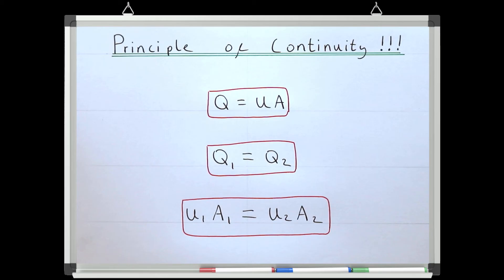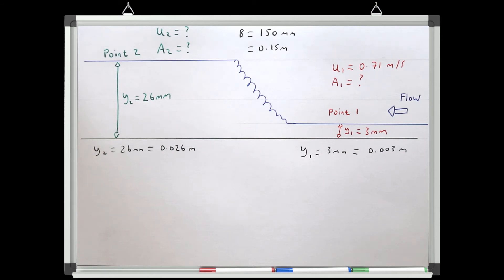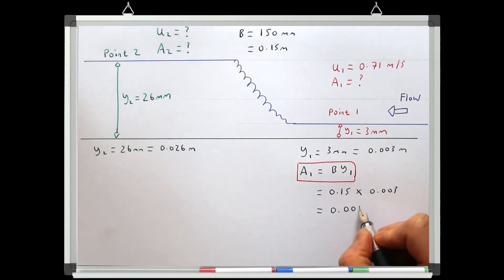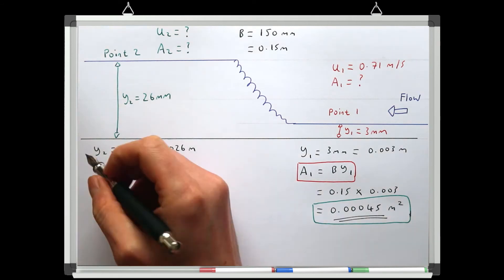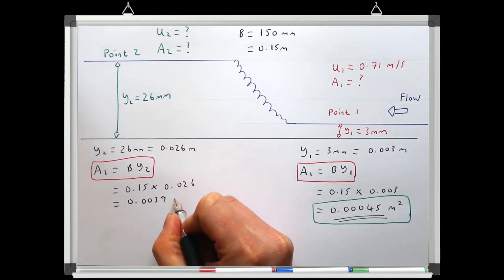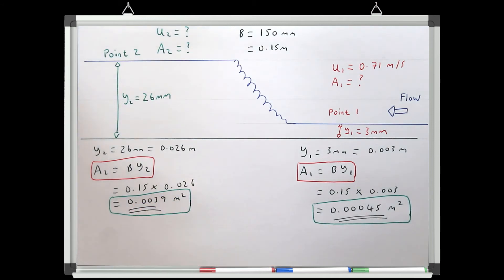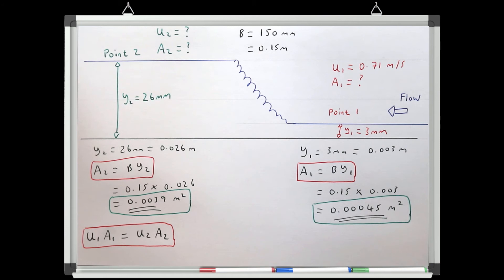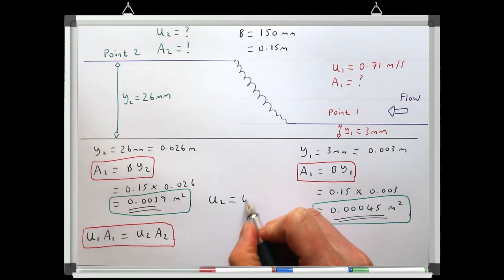However, as the flow is steady, we can use the continuity equation to solve this problem and get the velocity at point two. We can start by working out the area at point one, which is the width of the channel times the flow depth, with all parameters quoted in metres. We can then work out the area at point two, which is again the width of the channel times the flow depth at two, with all units quoted in metres. Now we have U1, A1, and A2, so the only unknown in the continuity equation is U2, and we can rearrange for U2 to get the velocity at point two.